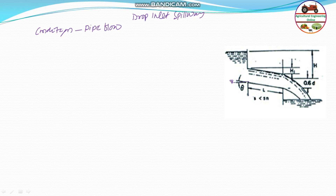The elevation of the inlet invert is 55 meter, and the outlet invert is 54.75 meter. So the slope of this pipe is 55 minus 54.75 = 0.25 meter, divided by the length of 20 meter, giving 0.0125. Since theta is very small, the slope is small compared to the neutral slope.